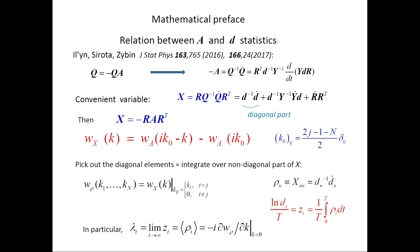Since we are interested in the diagonal part of X, we can restrict ourselves to the diagonal components. So we get the cumulant function of the diagonal components. Now, knowing the statistics of A, we can calculate any averages of the matrix D. In particular, it is easy to get the expression for the Lyapunov exponents in this case.